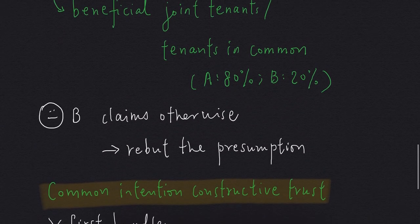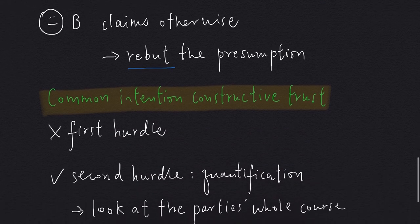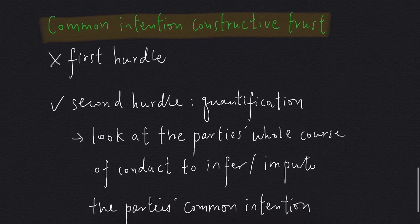So let's say B claims otherwise. B again has to rebut the presumption of equity follows the law. B has to establish Common Intention Constructive Trusts. This time, there is no need to overcome the first hurdle. It has been automatically overcome because the House has already been conveyed in joint names.